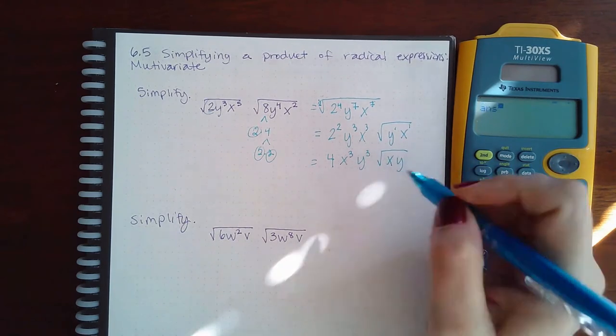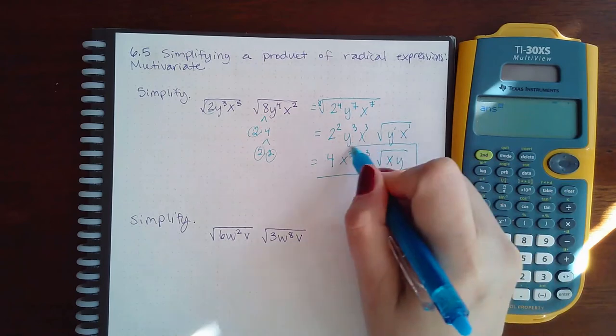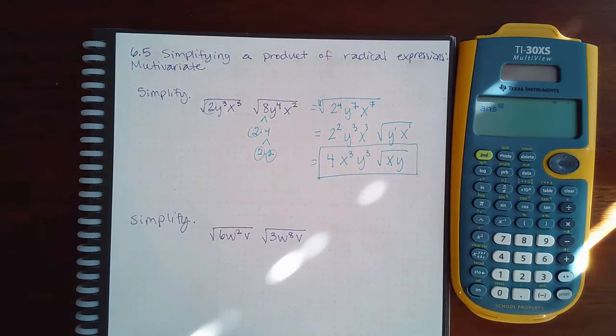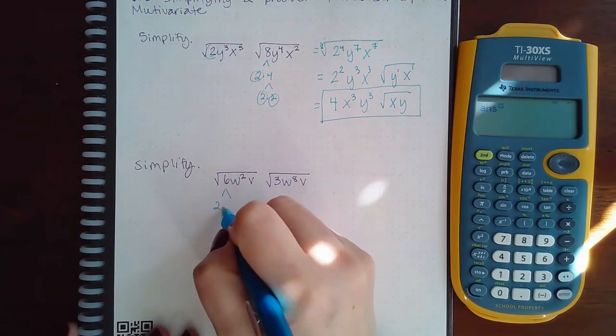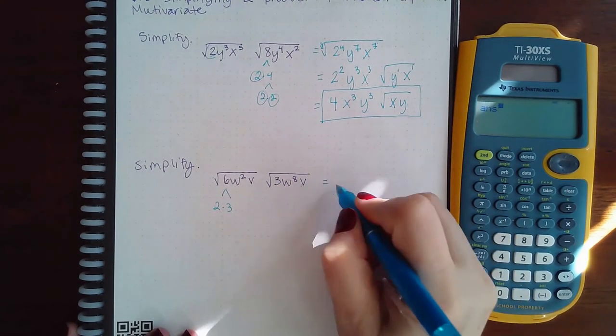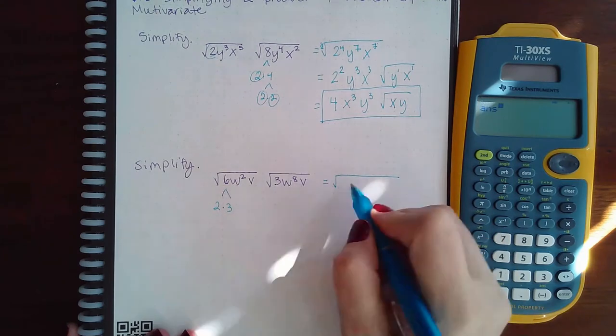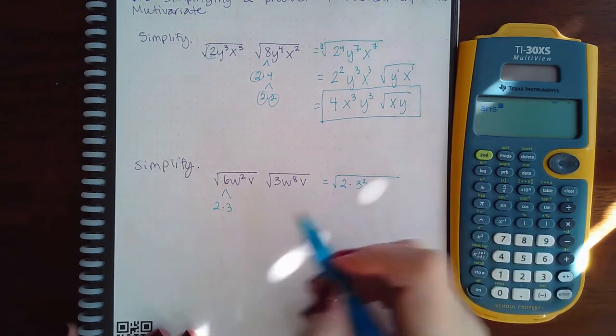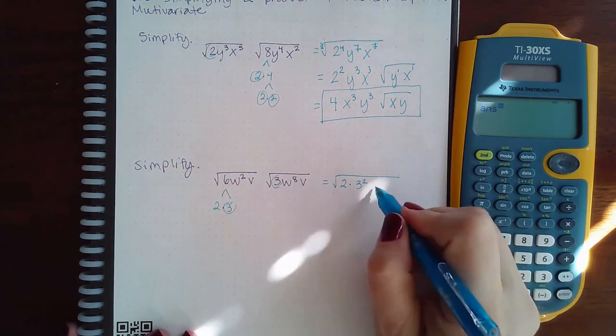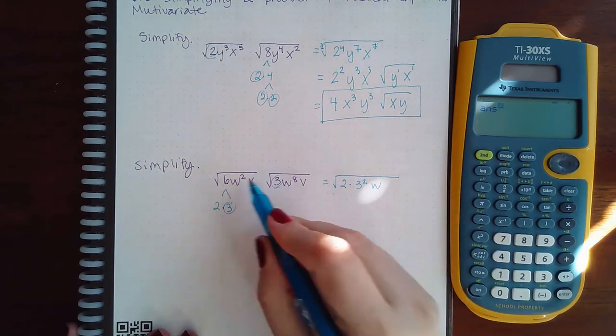Now the bottom one, 6 is 2 times 3, so if I write the number in its prime factorization I have a 2 and then I have a 3 squared. Then for the w I'm going to have 2 and 8 which makes 10, and v and v will make v squared.